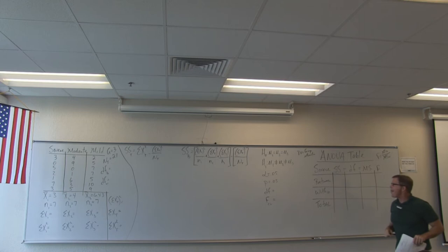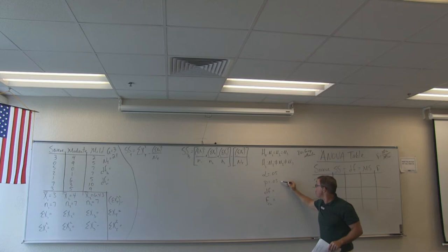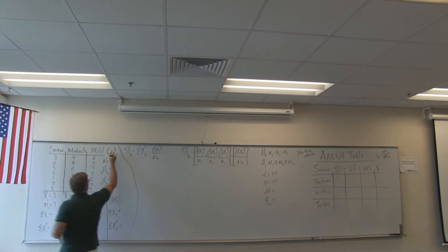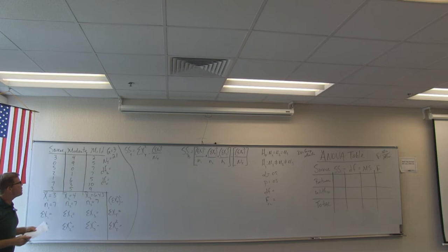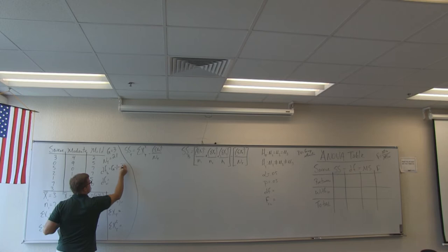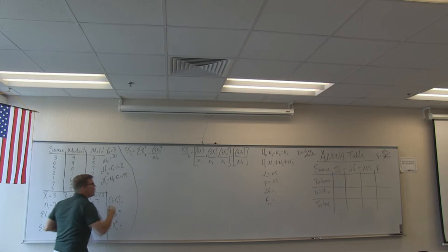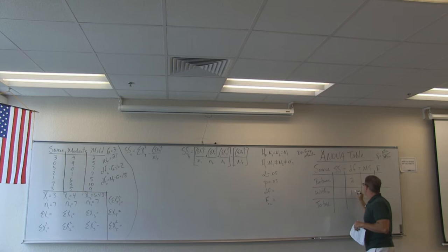We know that before we run any statistical test, our P equals alpha. In this case, we have three groups, so G equals three. Capital N sub T is 21 — the total number of subjects, three times seven. Degrees of freedom between is G minus one: three minus one is two. Degrees of freedom within groups is capital N sub T minus G: 21 minus three is 18. We have two and 18 degrees of freedom — two between, 18 within.